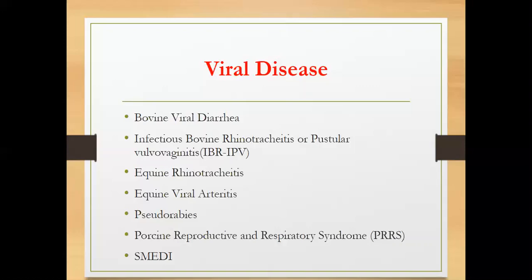Next we have pseudorabies, which primarily affects swine. It shares nervous signs with rabies, but the causative agent is a herpesvirus, not a rhabdovirus. The effects of pseudorabies include abortion, embryonic mortality, mummified fetuses, and stillbirth. Stillbirth refers to fetuses that are already dead when born. Mummified fetuses have been dead for some time and are already mummified — the difference being that stillborns appear fresher than mummified fetuses.